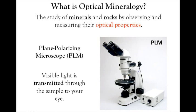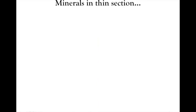What's key is that the visible light coming out of the light bulb in the bottom has to be transmitted through the sample to your eye. We're not looking at samples under reflection geometry — we're looking at light that actually transmits through the rocks and minerals. So the minerals have to be prepared in a specific way, and when we prepare them for use on the light microscope, they're called thin sections.